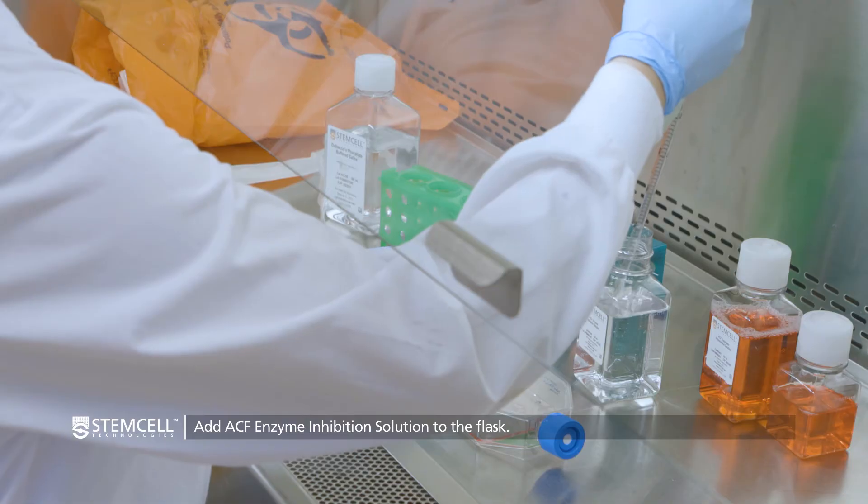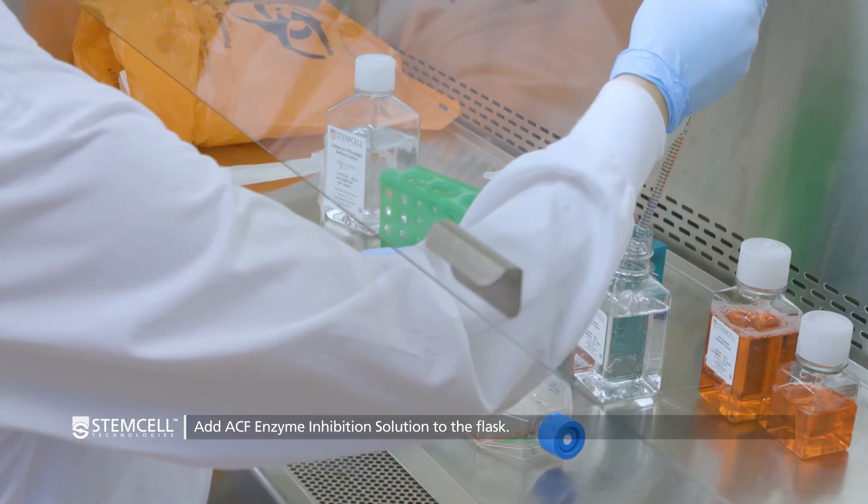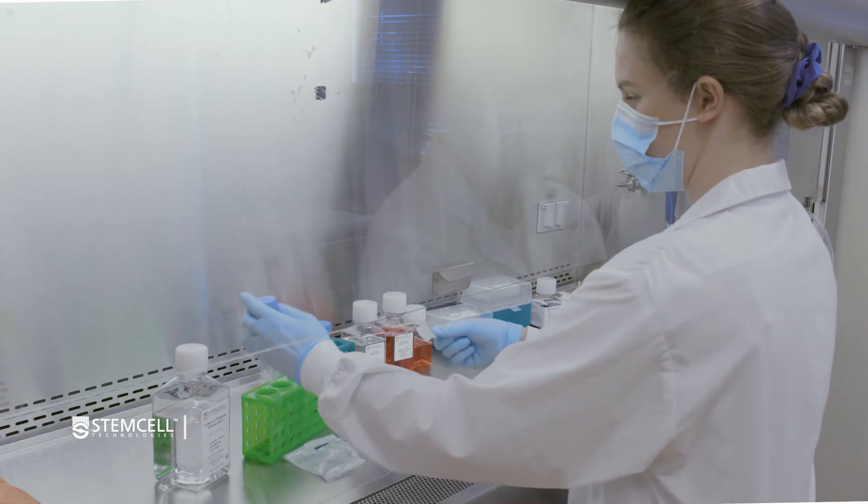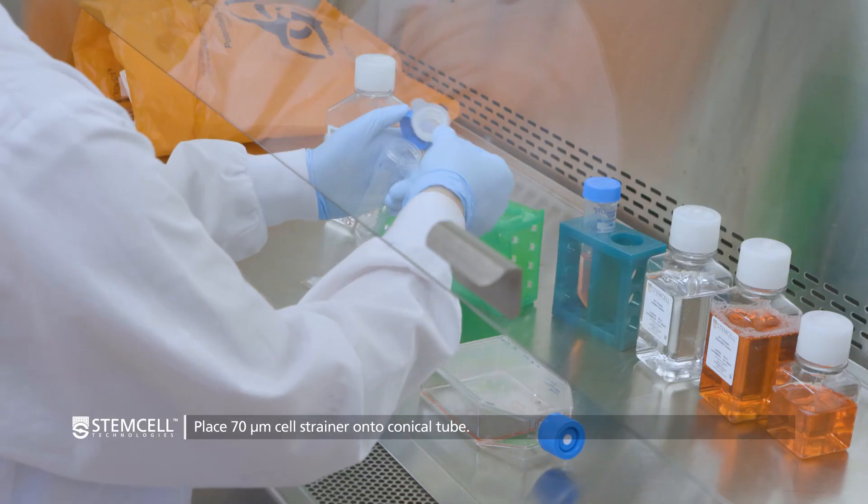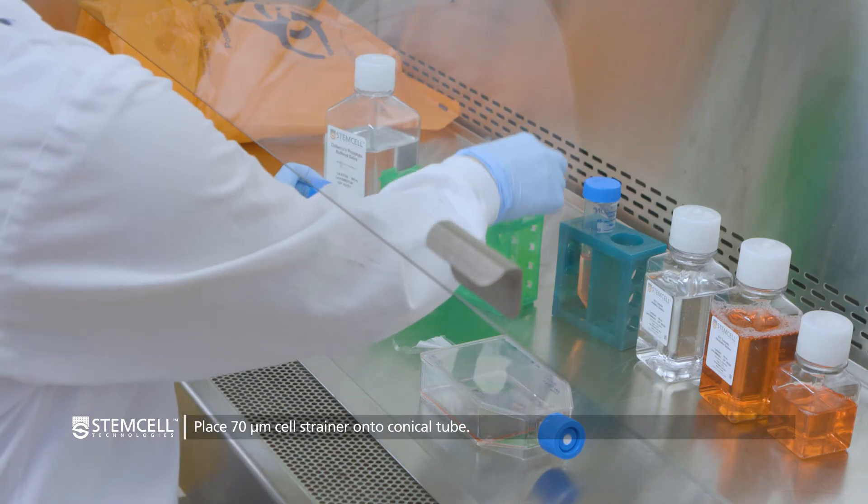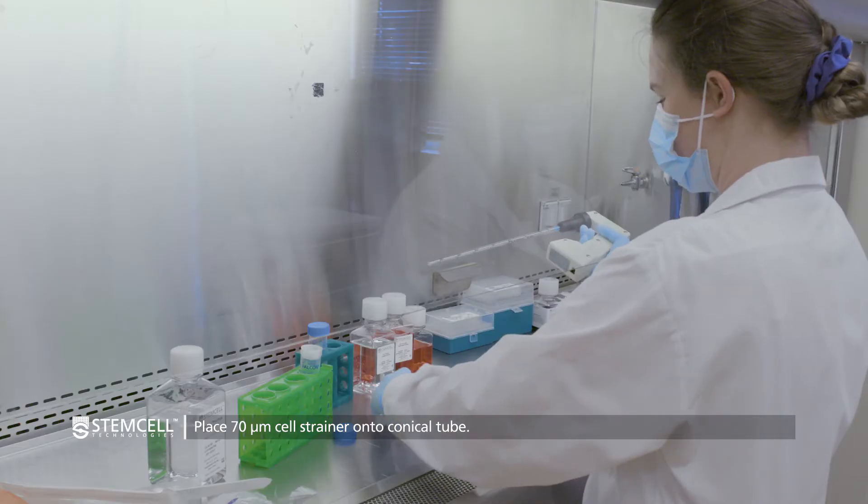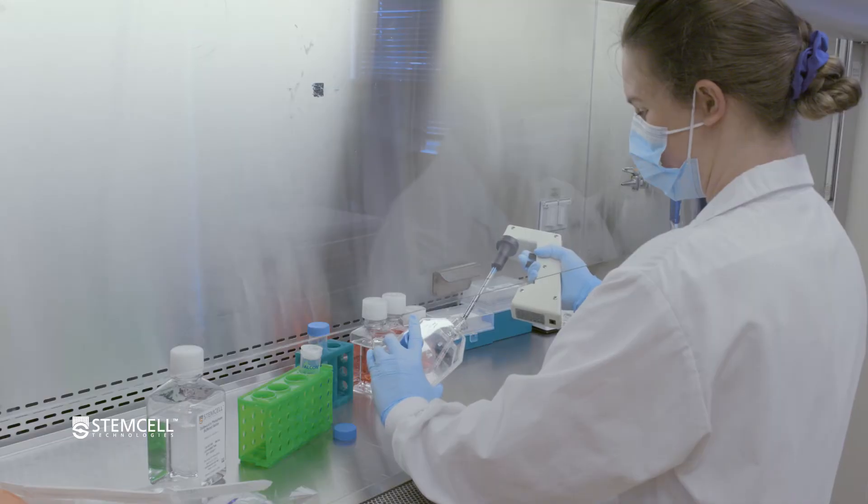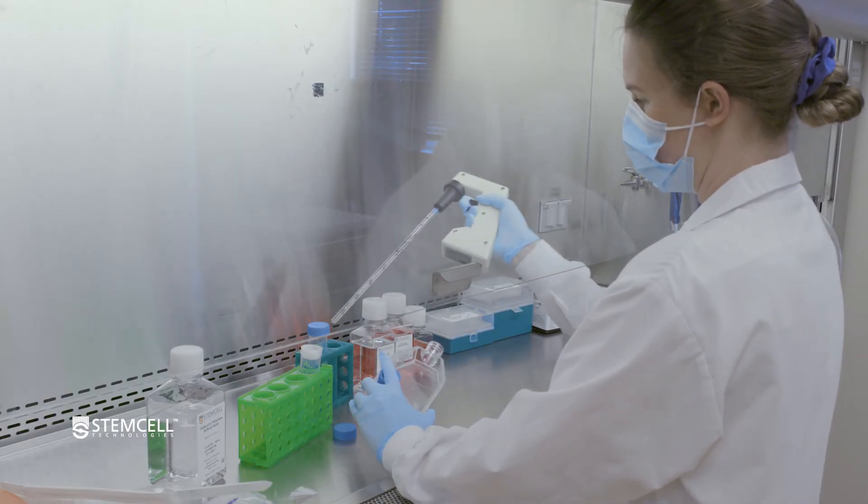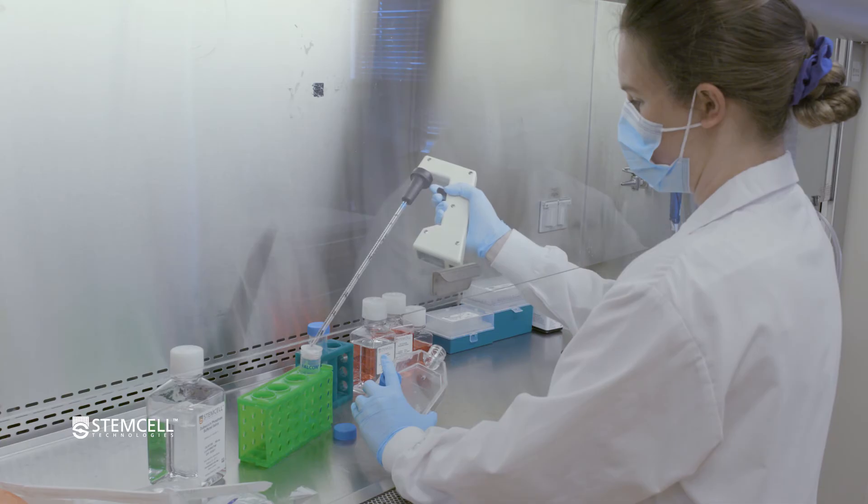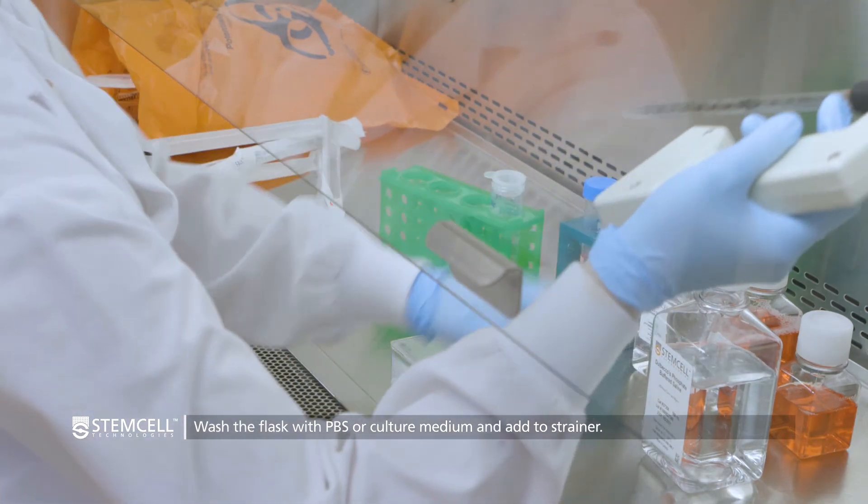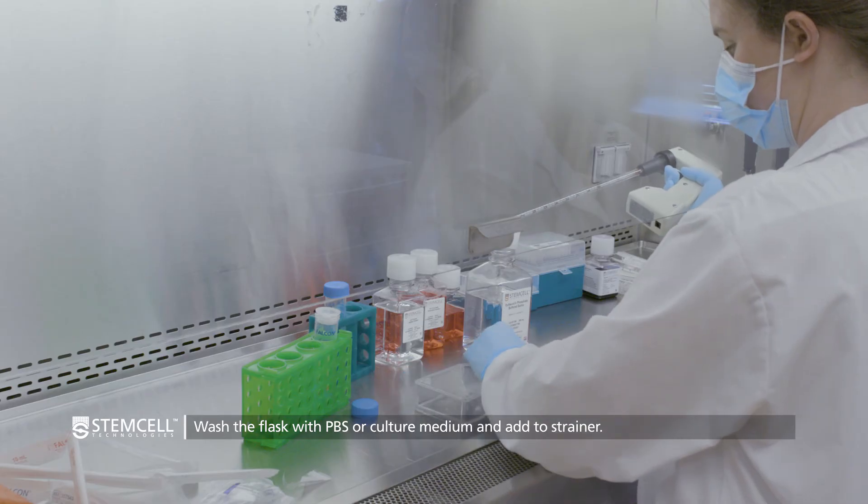Add 5 ml of ACF enzyme inhibition solution to the flask. Place a 70 or 100 micron cell strainer on a 50 ml conical tube. Remove the cells and tissue solution from the flask and strain to separate the tissue from the single cells. Wash the flask with about 10 ml of PBS or culture medium and add to the cell strainer.